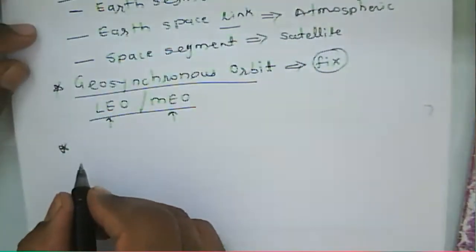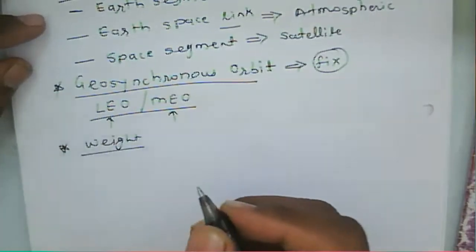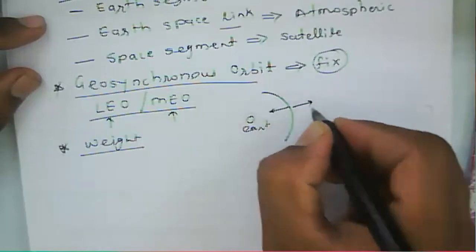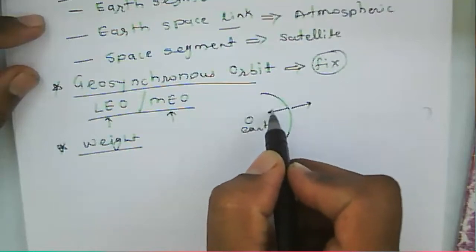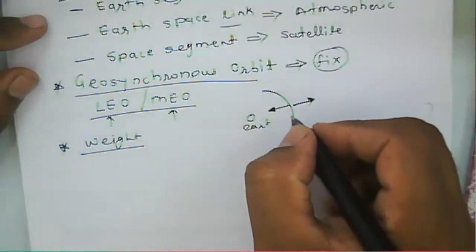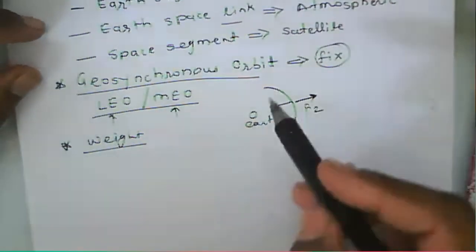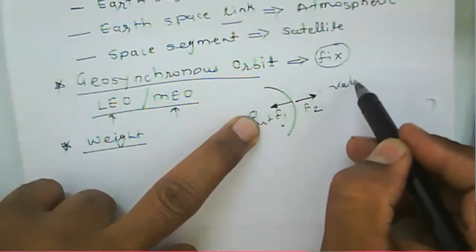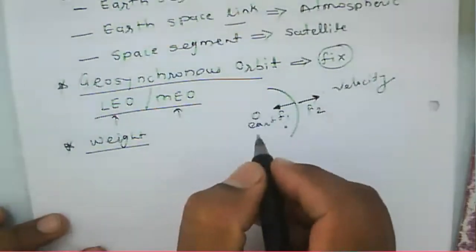In the case of a geosynchronous satellite, it looks stationary but it is rotating around the earth at the same speed as the earth's rotation. In the older system, the altitude and orbit change because of the weight of the satellite. When the satellite rotates around the earth, there are two forces: F1, which depends on the gravitational constant, and F2, which depends on the velocity of the satellite. When F1 and F2 are equal, the satellite moves in the same orbit.